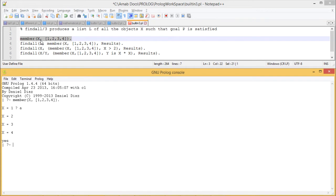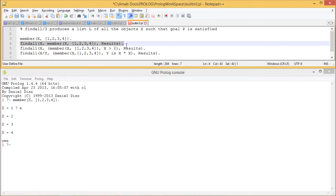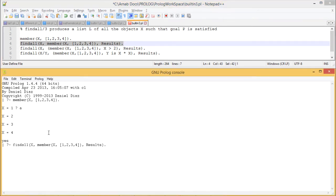Findall produces a list L of all the objects X such that the goal P is satisfied. Let me execute this goal here and you can see what are the outputs we are getting.